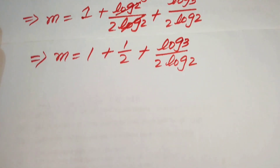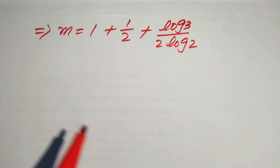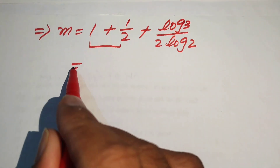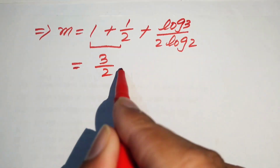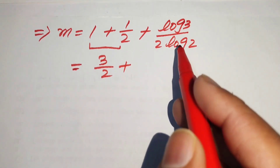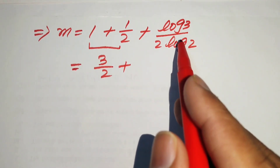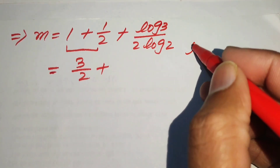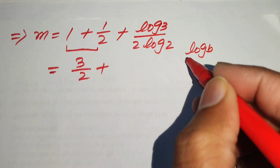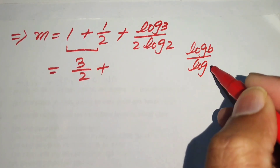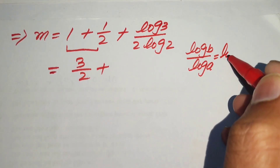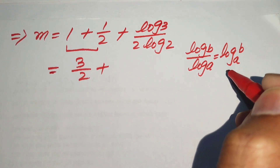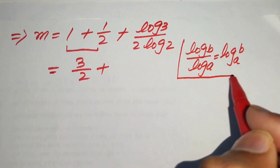We further simplify the terms. Taking the LCM of the constant terms gives us 3 over 2. We also apply the change-of-base property: if we have log of b divided by log of a, it equals log base a of b.